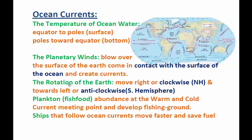The third factor is the rotation of the earth. The earth rotates from west to east. When the earth rotates, the water moves to the right — clockwise — in the northern hemisphere, and moves to the left — anticlockwise — in the southern hemisphere. In this way, the movement of ocean water is caused by the rotation of the earth.